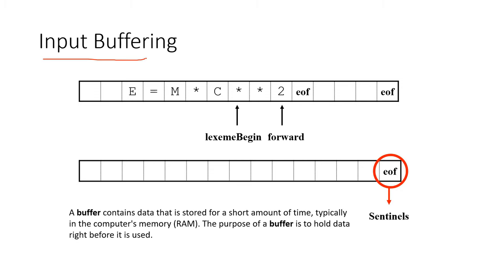A buffer contains data that is stored for a short amount of time, typically in the computer's memory (RAM). The purpose of a buffer is to hold data right before it is used. This typically means that if a process needs to be processed, before going straight into the processor it gets into the buffer and then it is passed to the processor.